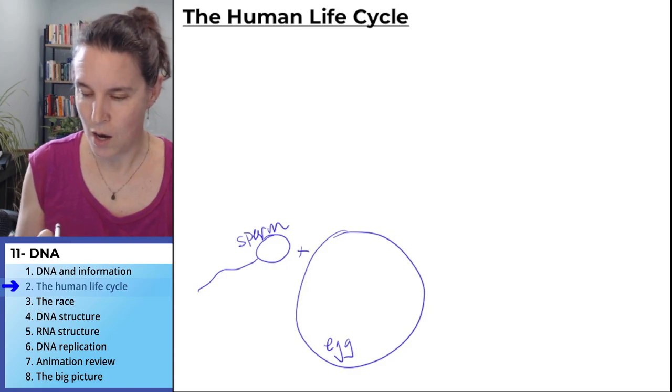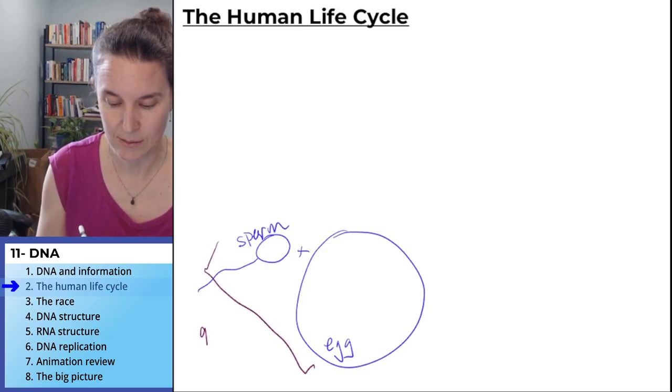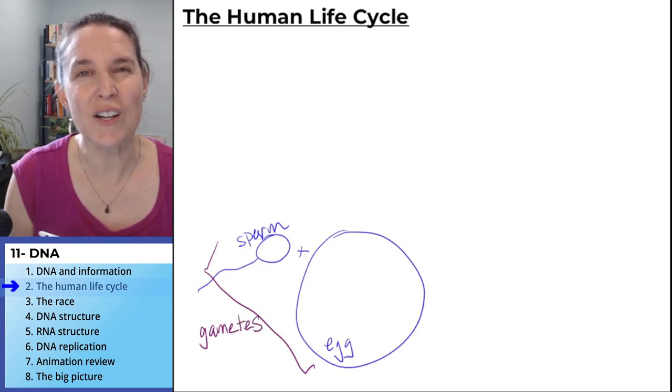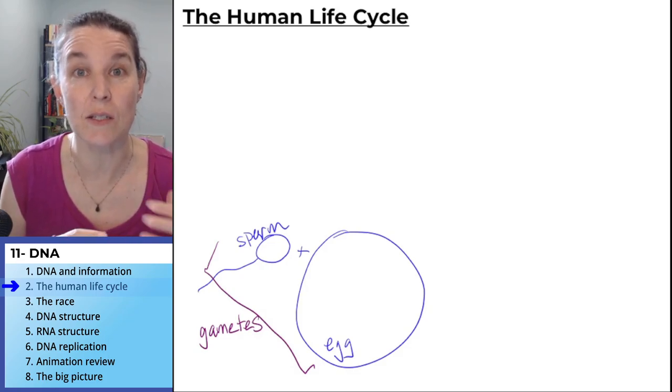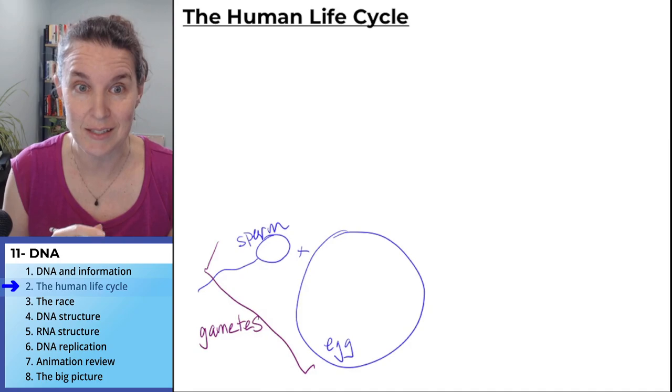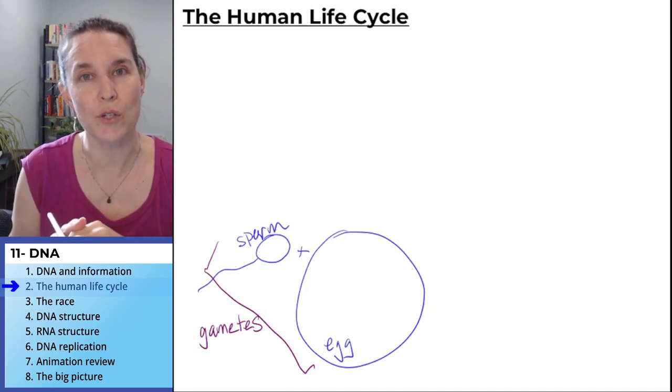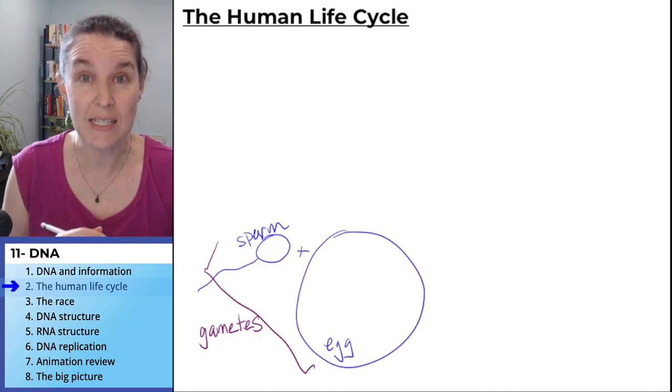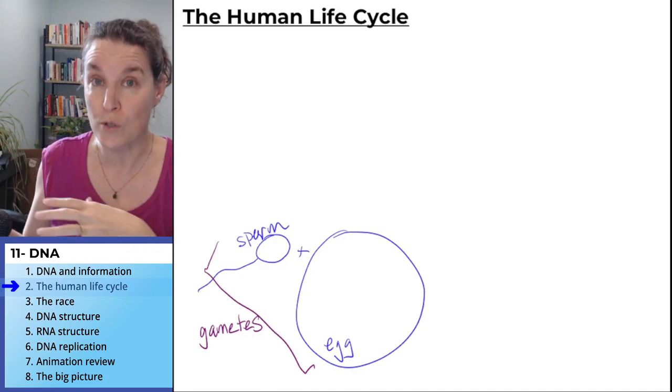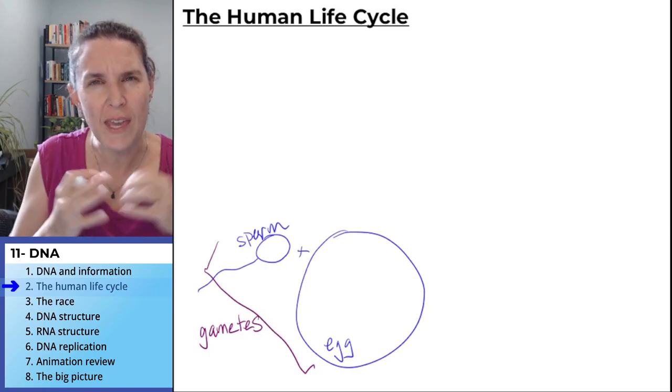Sperm are, both of these are gametes. Gametes are sex cells. So sperm are the gametes or the sex cells that are produced in testes. And eggs are the gametes or sex cells that are produced in ovaries. So folks who have testes produce sperm. Folks who have ovaries produce eggs. They're both gametes.